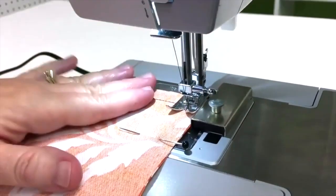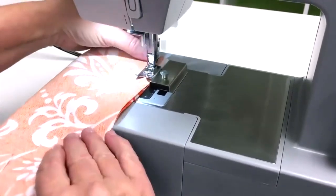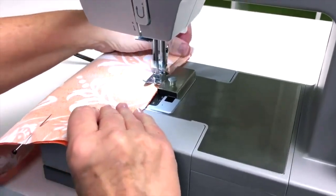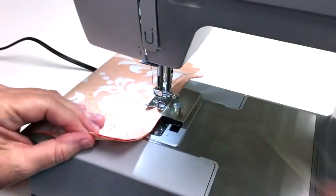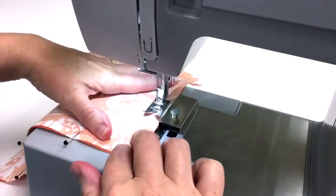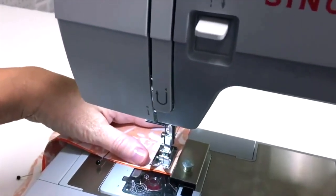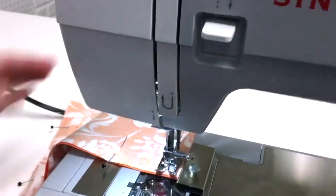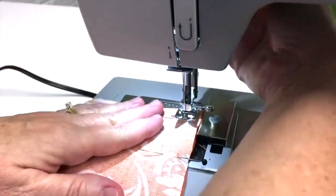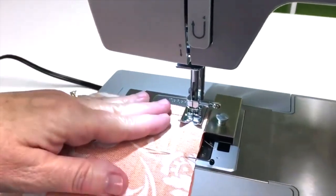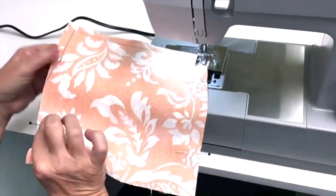When I get to a pin, I want to take it out. When I'm close to the corner, I'm going to hand turn the flywheel, make sure my needle is down, lift up my presser foot, and turn the fabric. Put the presser foot back down and continue on around the rest of my fabric. I'm going to stop at the bottom and backstitch.